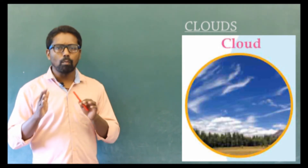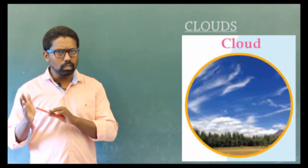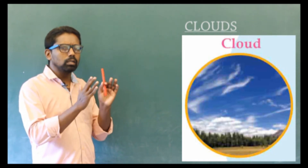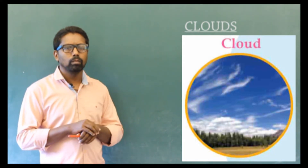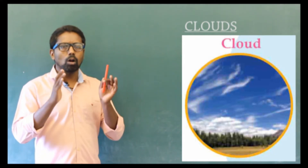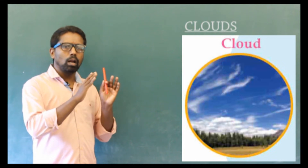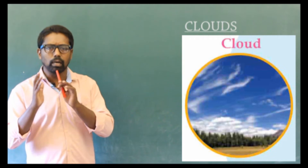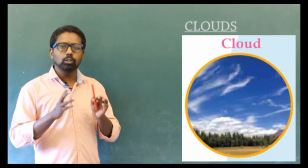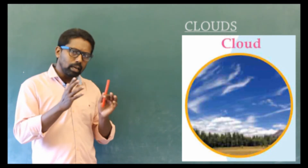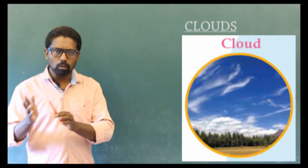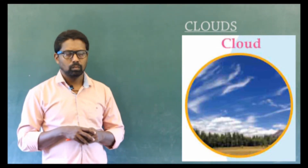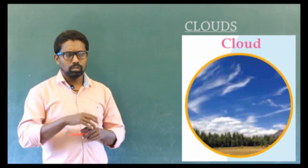The clouds are formed by the condensation of water vapor around the fine dust particles in the atmosphere. The water droplets so formed are less than 0.001 centimetre in dimension. That is why they remain suspended in the atmosphere. Next content related to clouds.